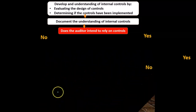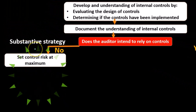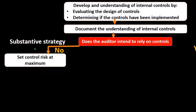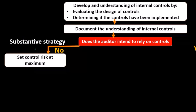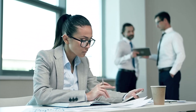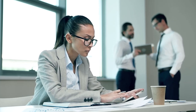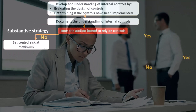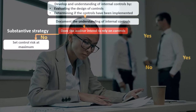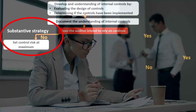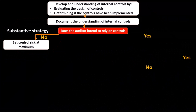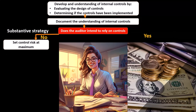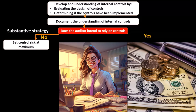For smaller companies, we may say no and do more substantive testing. In that case we follow a substantive strategy, setting control risk at the maximum — meaning there's a high risk the internal controls will not detect a material misstatement. We increase the amount of substantive testing instead of going further with testing internal controls we've determined are insufficient.